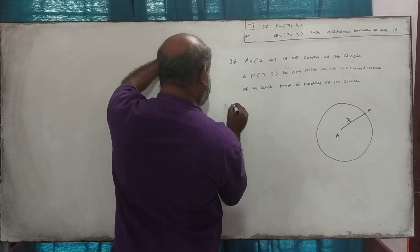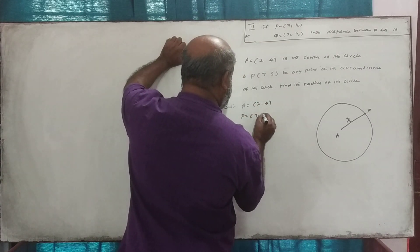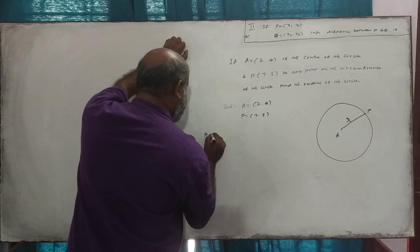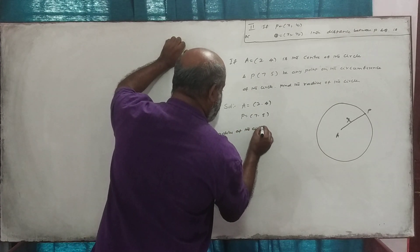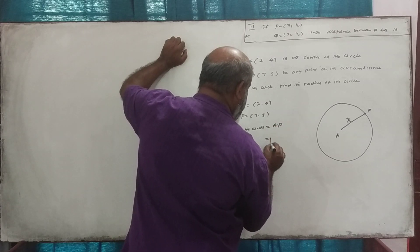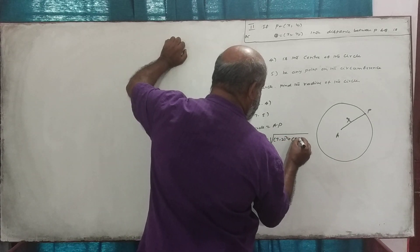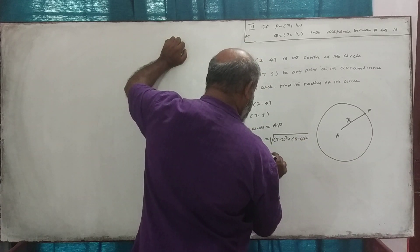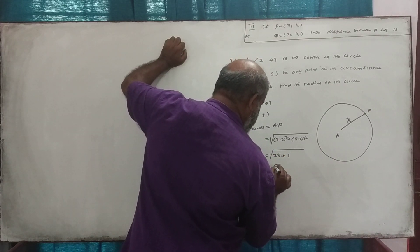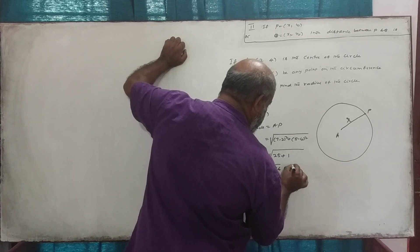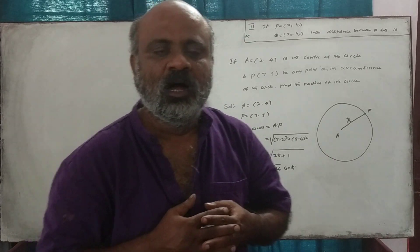The solution. A is the center of the circle. The radius of the circle: 7 minus 5 — 4 squared is 25. 5 minus 5 — 4 squared is 26. Note that this is the distance formula. This is the distance formula.